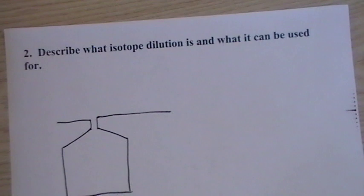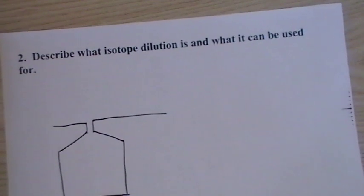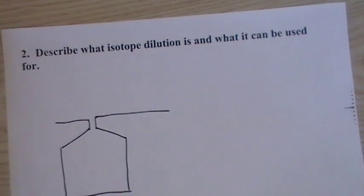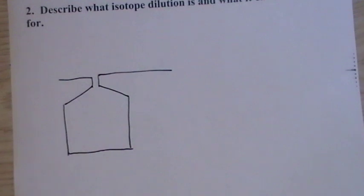So describe what isotope dilution is and what it can be used for. So back in the 1930s in the western part of the country, we had the Dust Bowl. People over-farmed and they didn't replace the nutrients in the soil, and all the topsoil of the huge areas of the western part of the country just turned into dust and blew away.